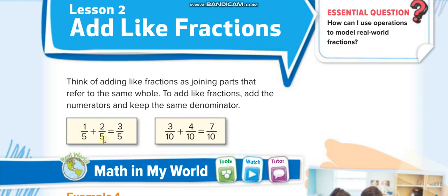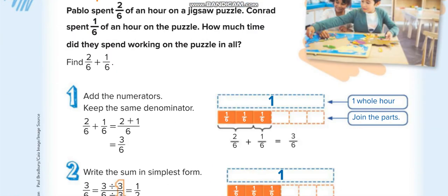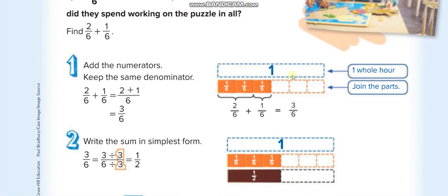So 1 over 5 plus 2 over 5 is equal to 3 over 5. You will not write it as 3 over 10 — that is wrong. And 3 over 10 plus 4 over 10 equals 7 over 10.